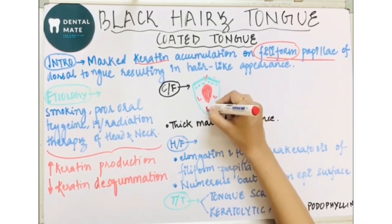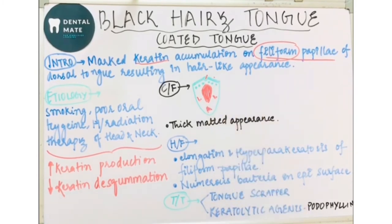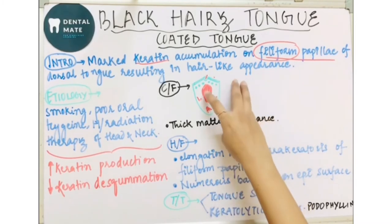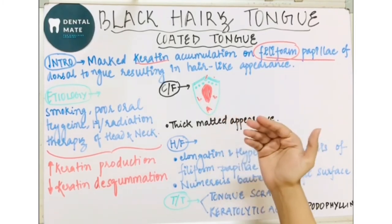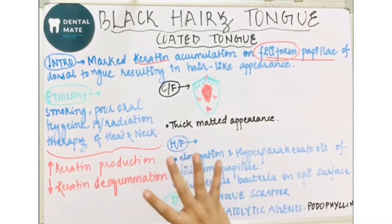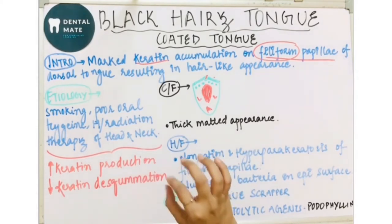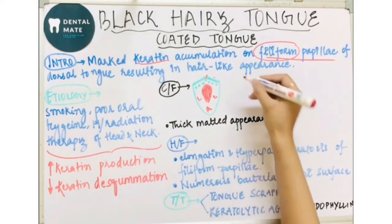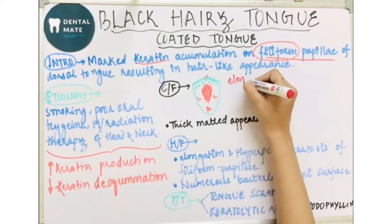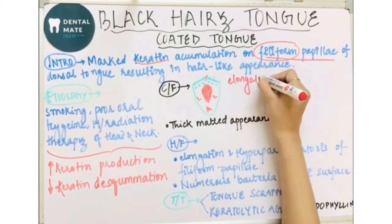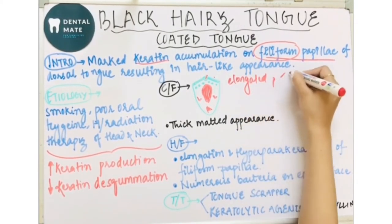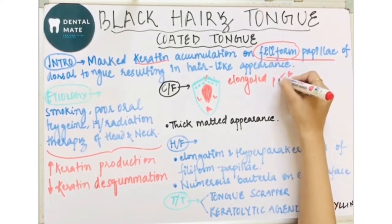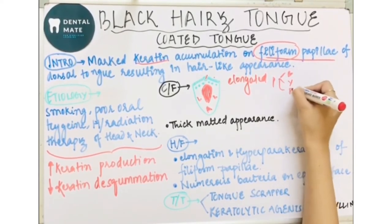The anterior border and lateral surface is spared. In the affected area, there are elongated papillae which are usually brown, yellow, or black in color.